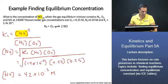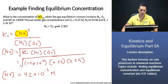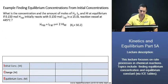That's how you would find that. Now let's continue with our next problem. What is the concentration and the amount of moles of hydrogen, iodine, and hydrogen iodide at equilibrium if 0.15 moles of hydrogen initially reacts with 0.15 moles of iodine in a 15 liter reaction vessel at 445 degrees Celsius?